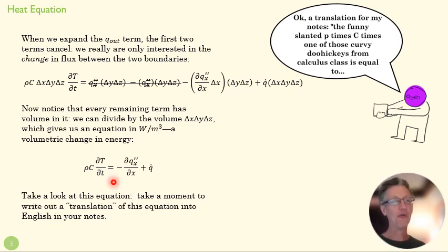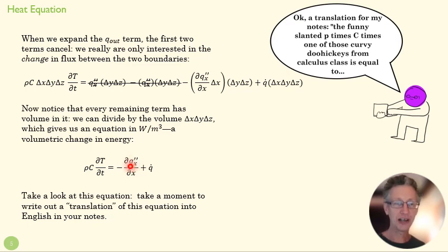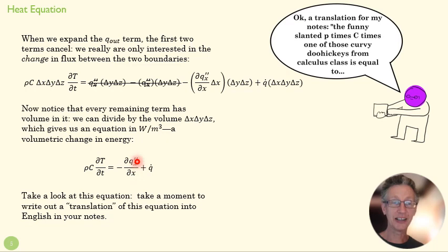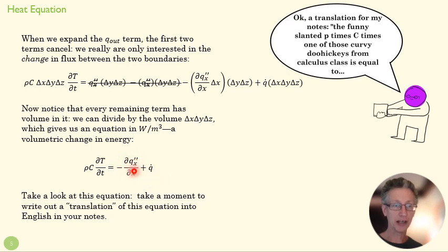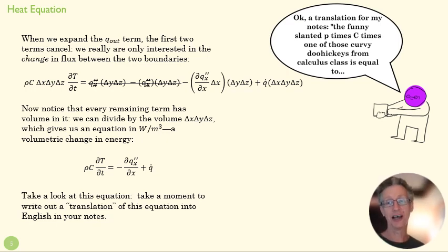What does this equation mean? The change in energy of our infinitesimal cube equals the change in flux from one side of the cube to the other, plus whatever energy is being generated. If q gets bigger as we move from x to x plus Δx, more energy is leaving than is coming in — the slope is positive, the energy in the volume is going down, and the temperature is going to go down. It's just the first law in differential form.